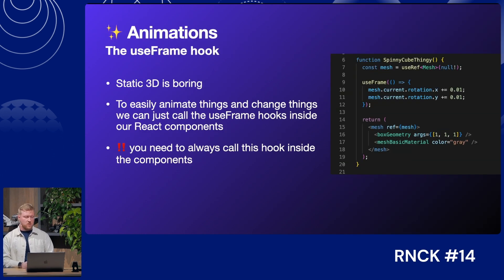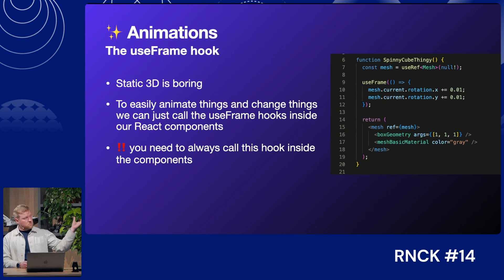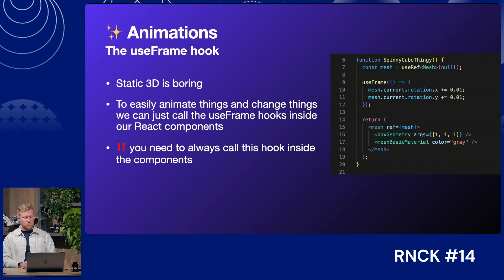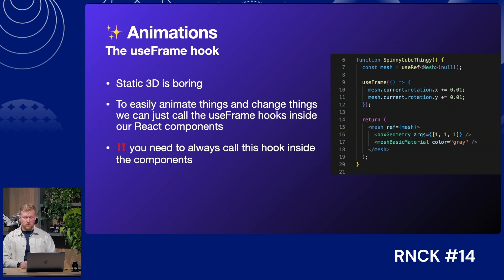Animations are also pretty easy — static 3D is boring. If you need to animate something there's a hook for it. Just put useFrame inside the spinny cube component and because it updates 60 times per second you get to animate it nicely, giving you the spinning box result I showed earlier. You can't call useFrame at the top level — you need to call it inside a component, which leads to you building components that you can easily share even in the 3D world.